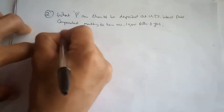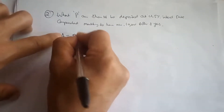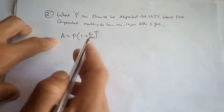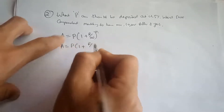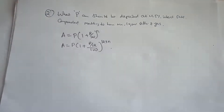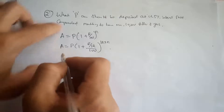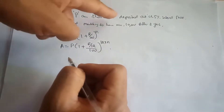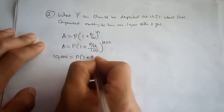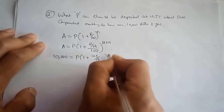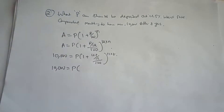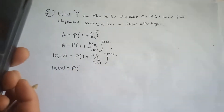Using the formula: amount equals P times 1 plus R over 12 over 100, raised to 12 times N. Substituting: 10,000 equals P times 1 plus 4.5 divided by 12 divided by 100, raised to 12 into 8. So 4.5 divided by 12 is 0.375, divided by 100 is 0.00375.